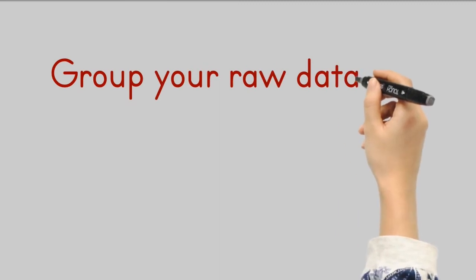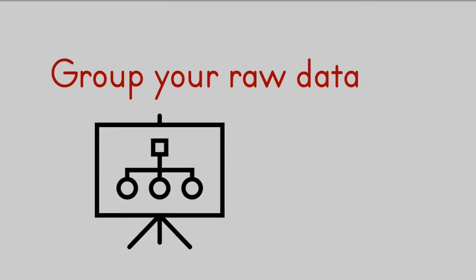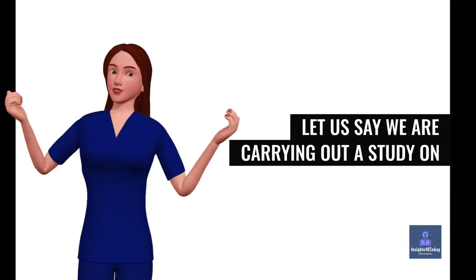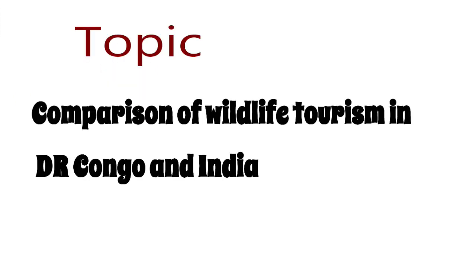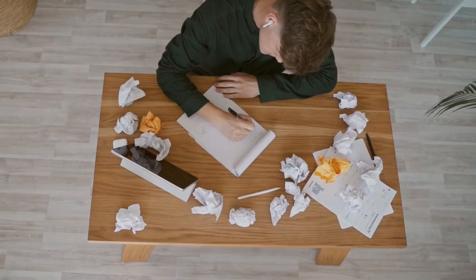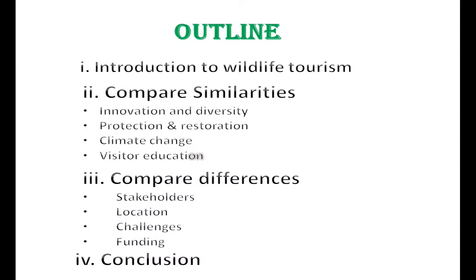Then group your raw data. It is all about organizing your data so that it is understood by your audience. Let us say we are carrying out a study on the topic: Comparison of Wildlife Tourism in DR Congo and India. Take a paper or note and write down all your data gathered, connecting them to another line. Then arrange your data into an outline format.